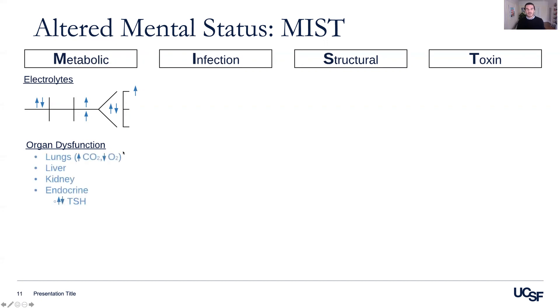Organ dysfunctions can include the lungs, such as in hypercarbic or hypoxic respiratory failure; the liver, such as in cirrhosis, leading to hepatic encephalopathy; renal failure; as well as endocrinopathy, such as hyper- or hypothyroidism.